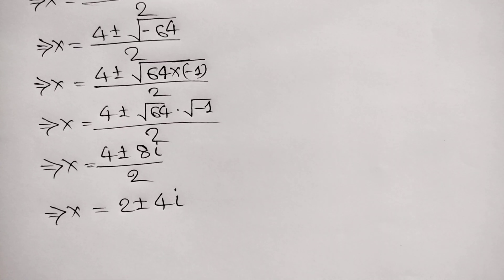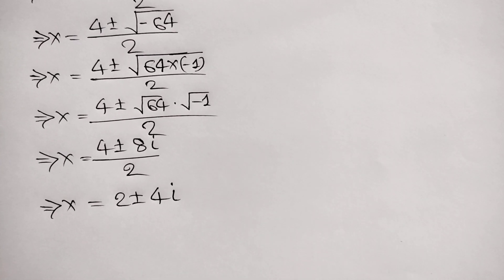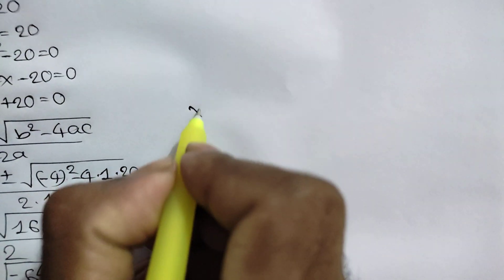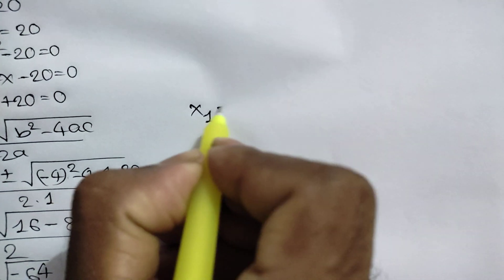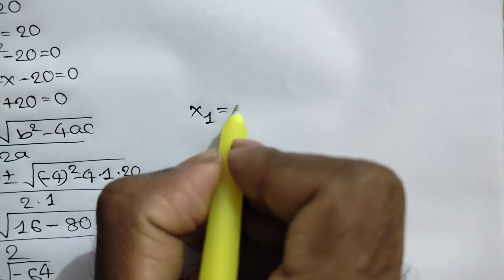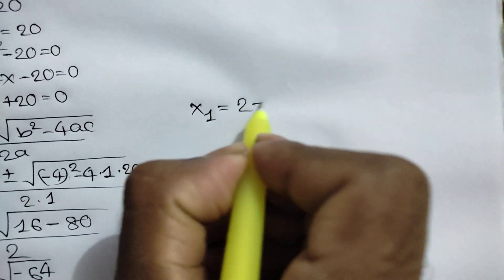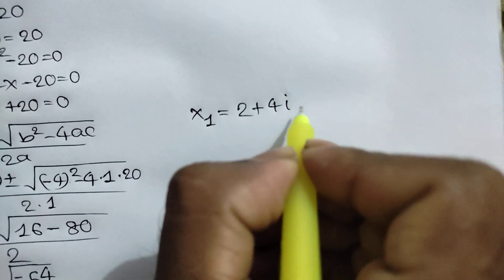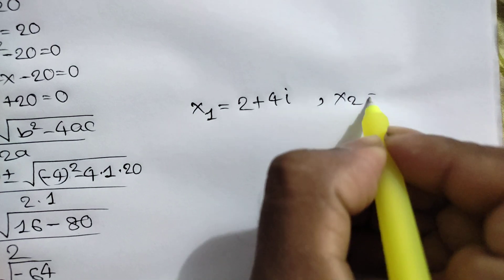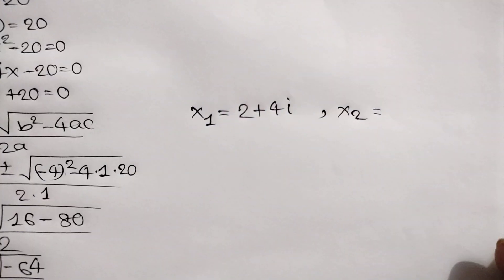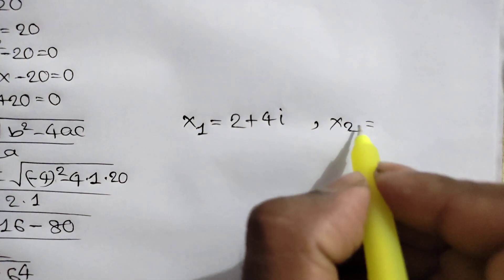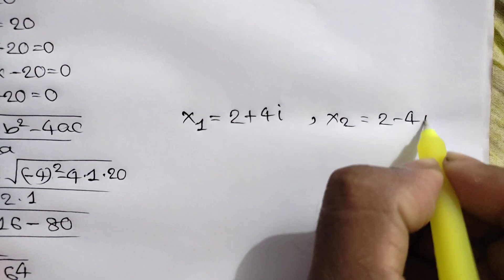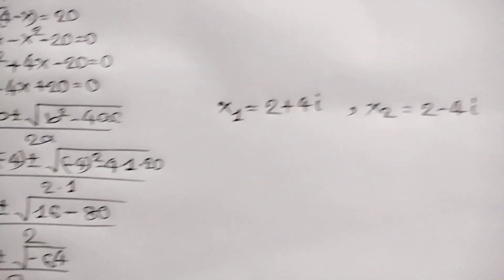So there are two values of x: x1 is equal to 2 plus 4i, and x2 is equal to 2 minus 4i.